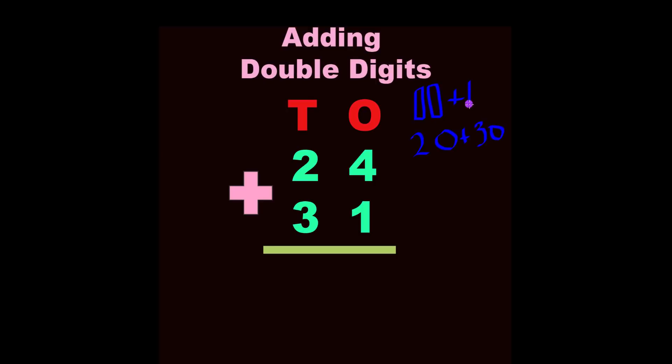And how many ten sticks do we have? We have one, two, three. So when you count it all together you will have 10, 20, 30, 40, 50.